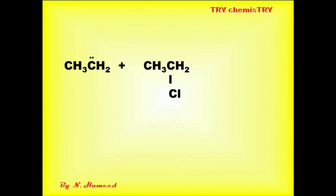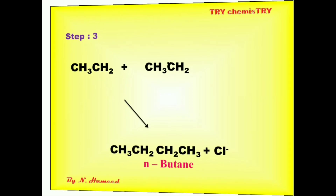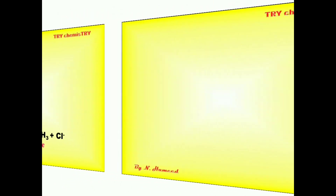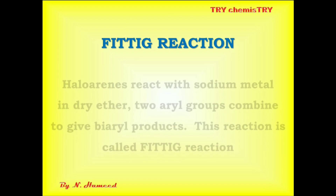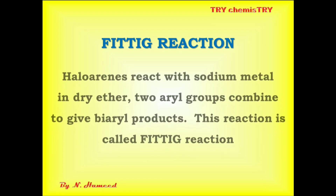The hydrocarbon receives an electron from the sodium atom, leaving a sodium plus ion. Now the ethyl group has two electrons — a pair of electrons — which it donates to the alpha carbon in another molecule of chloroethane. That carbon leaves Cl minus, and both hydrocarbon groups bond with each other to give n-butane.